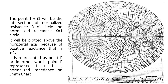On the right hand side you are seeing the Smith chart. The point 1 plus j1 — we want to plot this point on the Smith chart. 1 is the real part and this is our imaginary part. This part will be represented on the R circles, that is the resistance circles, and this part will be represented on the X circles, that is the reactance circles.